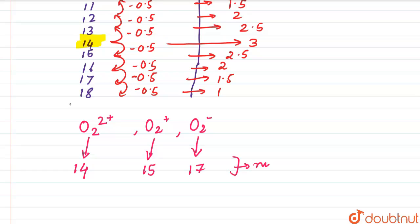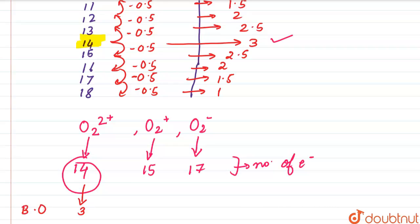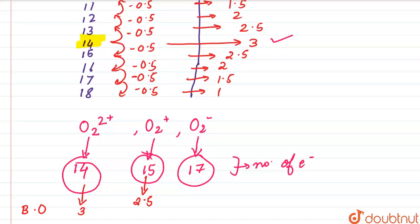For O₂⁺ the number of electrons is 15, and for O₂⁻ it is 17. Looking at the bond orders: bond order is maximum for 14 electrons, giving O₂²⁺ a bond order of 3. O₂⁺ has 15 electrons and a bond order of 2.5, and O₂⁻ has 17 electrons and a bond order of 1.5.